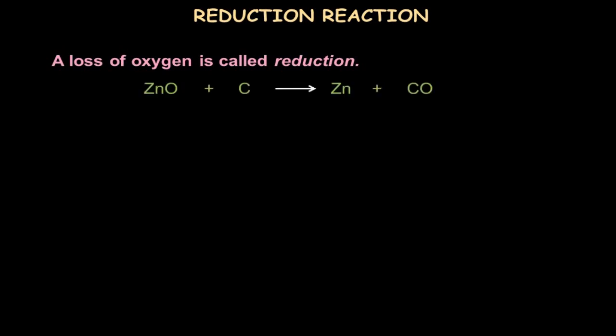Now, what is a reduction reaction? In terms of oxygen, if gaining of oxygen is oxidation, then loss of oxygen should be called reduction. Here zinc oxide is reacting with carbon to form zinc and carbon monoxide. Zinc oxide has lost its oxygen to become zinc, so the reduction process has occurred — zinc oxide is reduced to zinc.